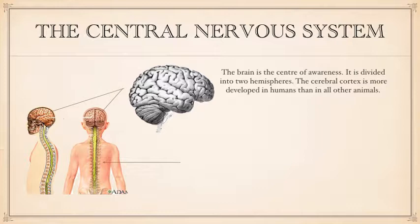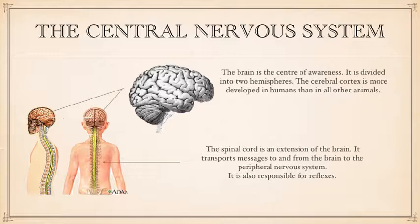The spinal cord, on the other hand, is an extension of the brain and its job is to transport messages to and from the peripheral nervous system. It's also responsible for reflexes — for example, pulling your hand away from a hot plate when you touch it.